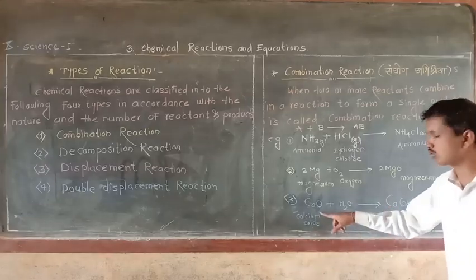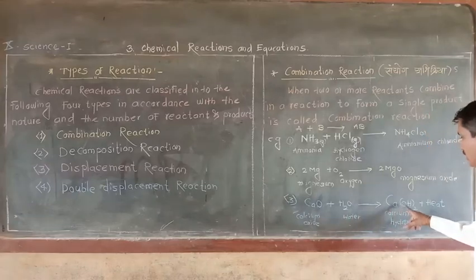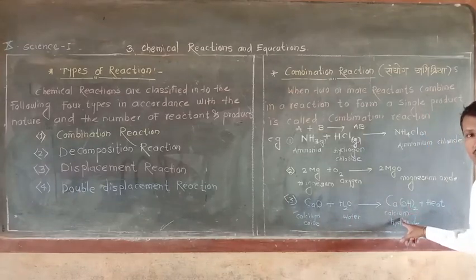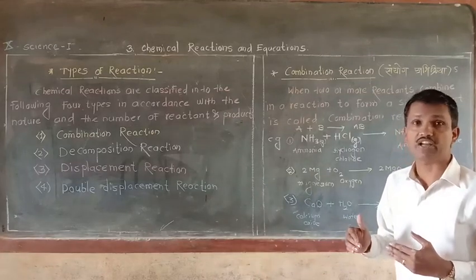Here also, two reactants are taking part in the reaction and only single product. Calcium hydroxide is a single product which is formed. So it is also a combination reaction.